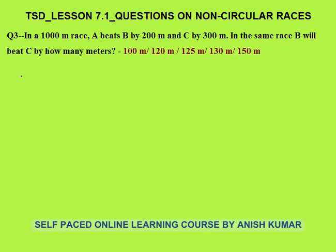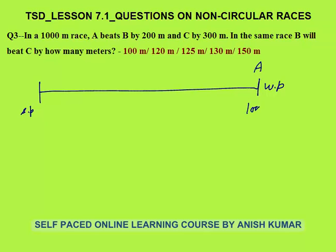Third question: In a 1000 meter race, A beats B by 200 meters and C by 300 meters. The race is 1000 meters. When A is at 1000 meters, B is 200 meters behind at 800 meters, and C is 300 meters behind at 700 meters. The question asks: in the same race, by how many meters will B beat C?